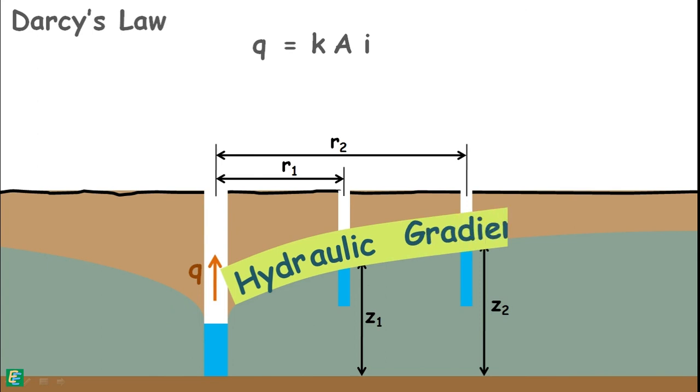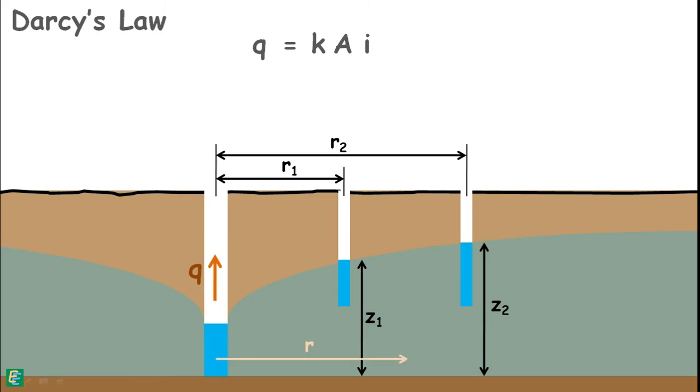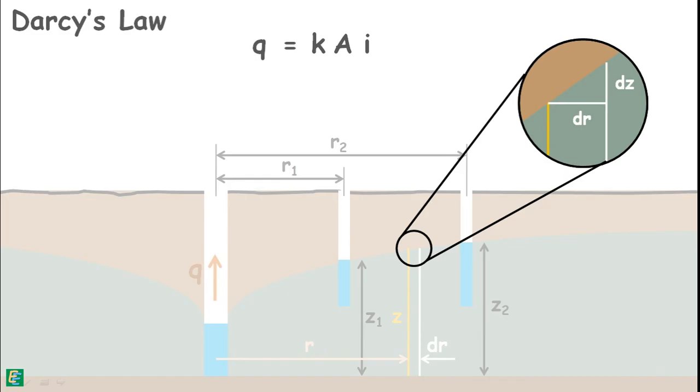We can see the hydraulic gradient has a curved profile. It is not constant. So let's assume that at some distance r from the center of the well, water level is z. And at a little distance dr away, the height of the water level increases by dz height. For such a short distance, we can consider the hydraulic gradient as constant.